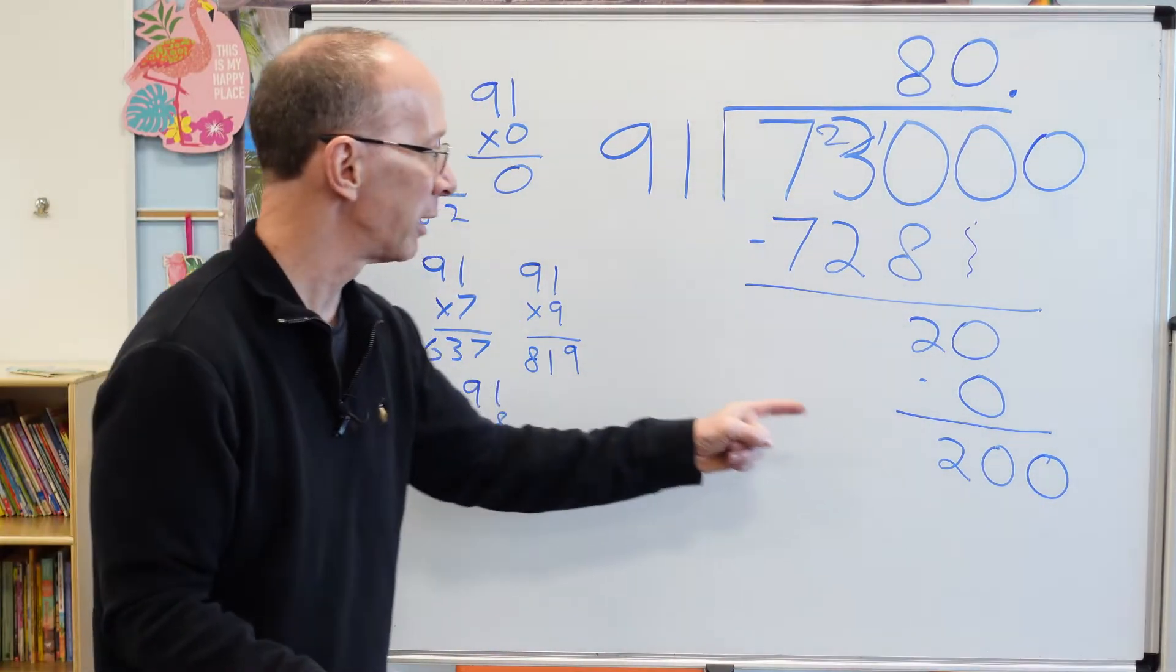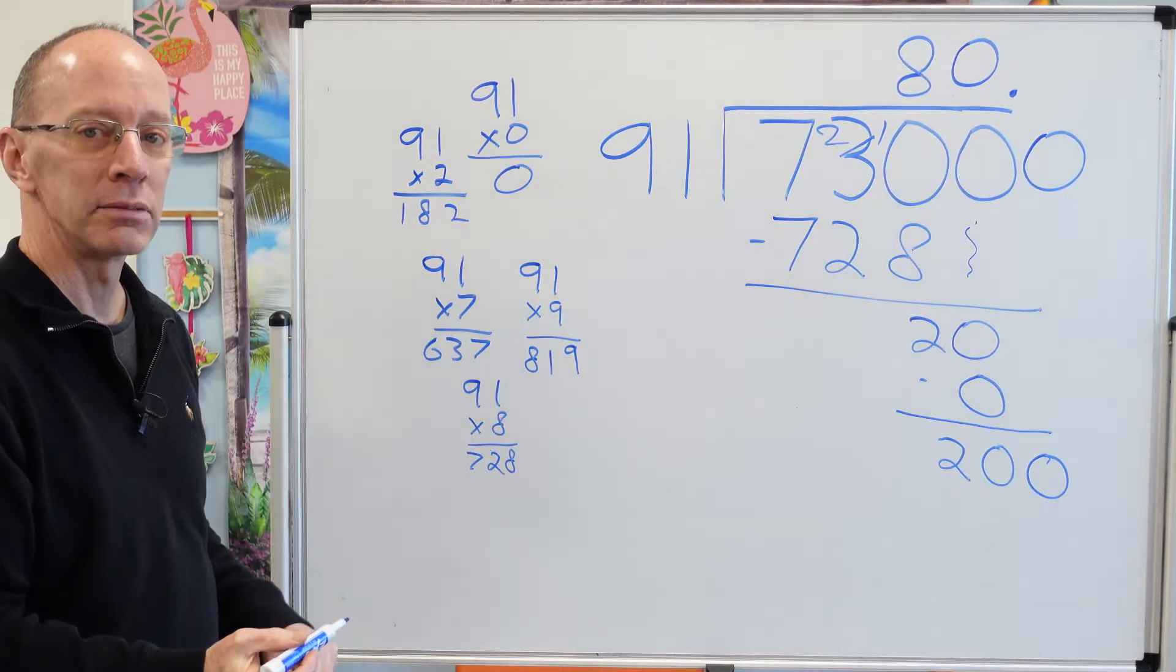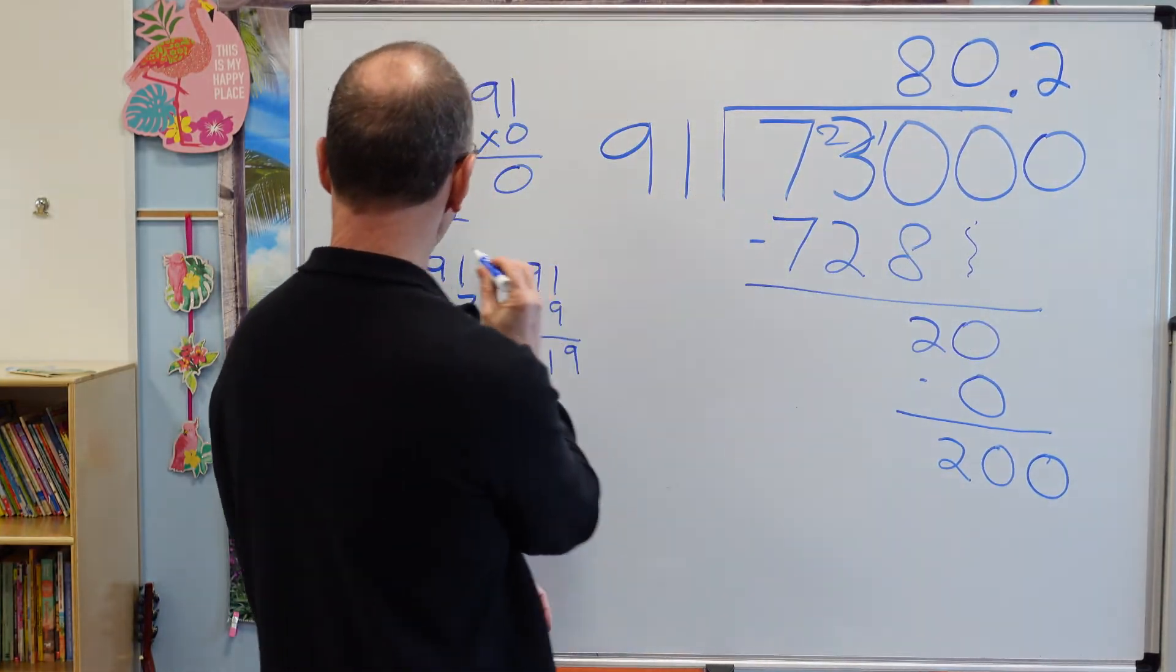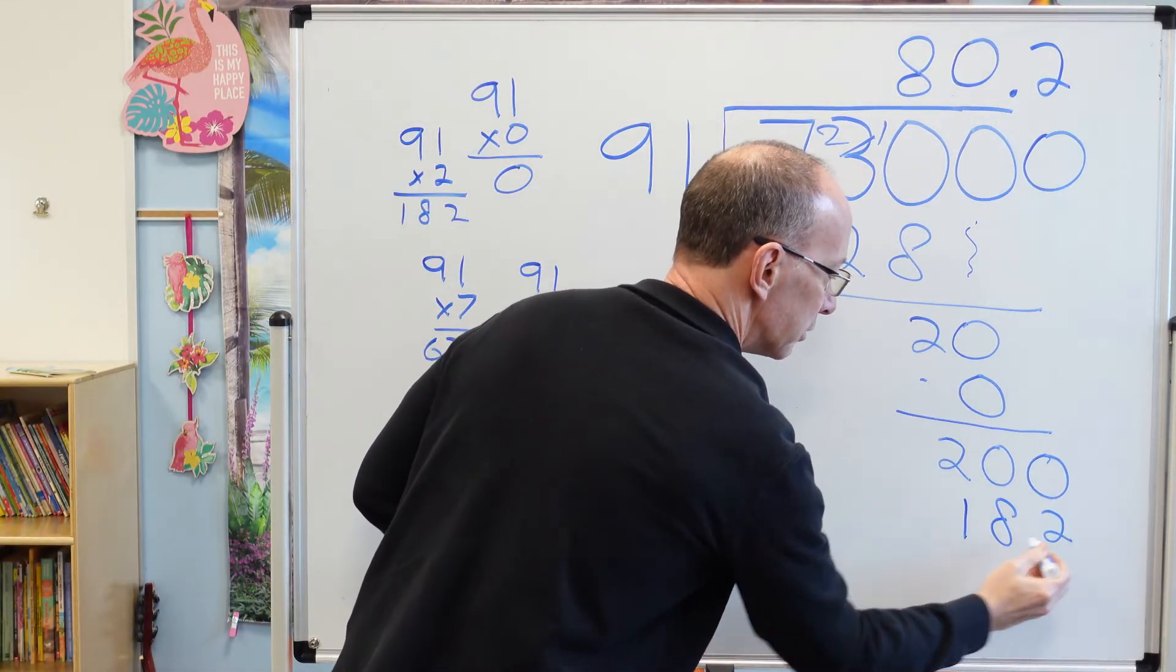So now how many times can I put 91 into 200? Right there. 2. So I put a 2 right here. 2 times 91 would be 182.